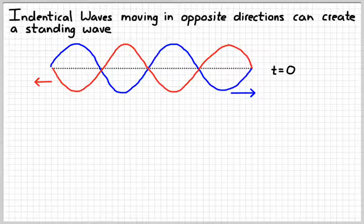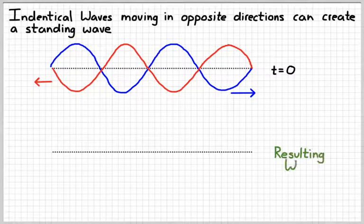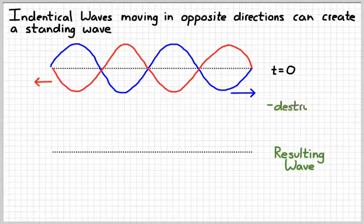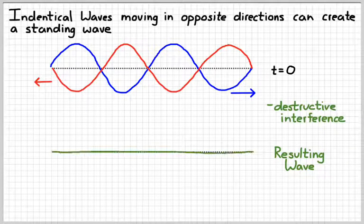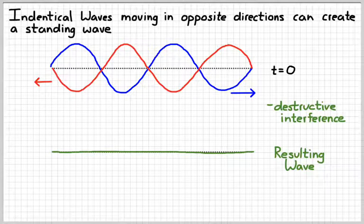The way those two waves are drawn, they're lined up out of phase, where the crest of one wave is lined up with the trough of the other wave, which results in destructive interference. So the resulting wave would simply look like a flat line. At that moment in time, those two waves interfere to give you destructive interference.